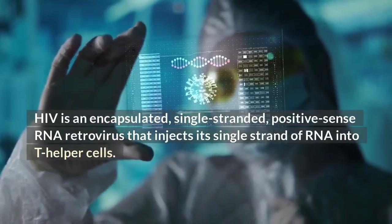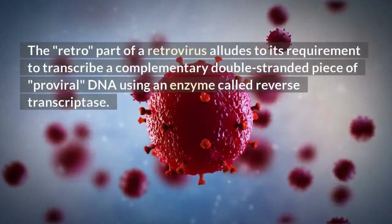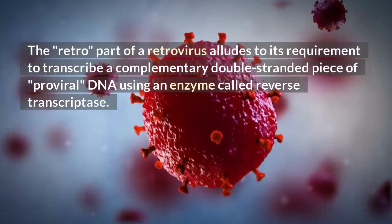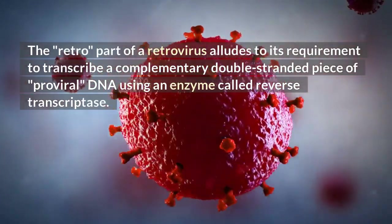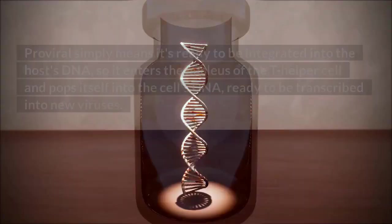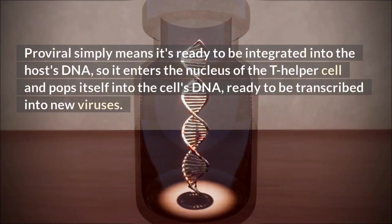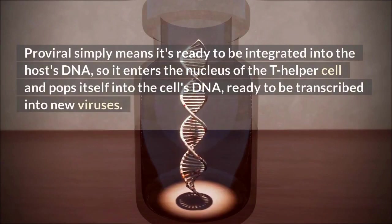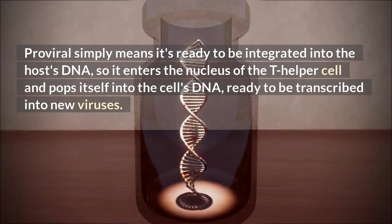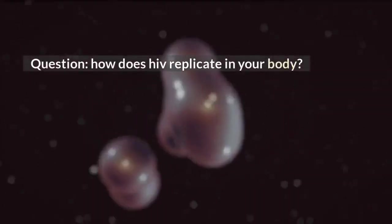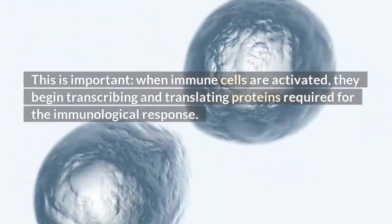The 'retro' part of a retrovirus alludes to its requirement to transcribe a complementary double-stranded piece of proviral DNA using an enzyme called reverse transcriptase. Proviral simply means it's ready to be integrated into the host's DNA, so it enters the nucleus of the T helper cell and pops itself into the cell's DNA, ready to be transcribed into new viruses.